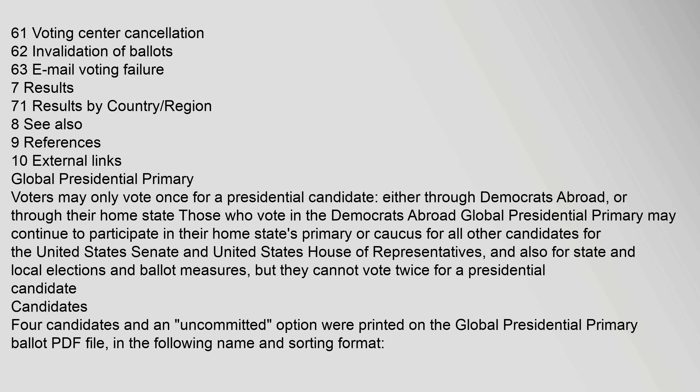Global presidential primary voters may only vote once for a presidential candidate, either through Democrats Abroad or through their home state. Those who vote in the Democrats Abroad global presidential primary may continue to participate in their home state's primary or caucus for all other candidates — for the United States Senate, House of Representatives, and state and local elections — but they cannot vote twice for a presidential candidate.